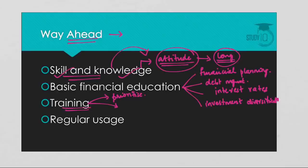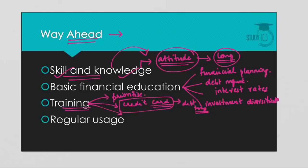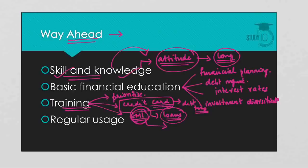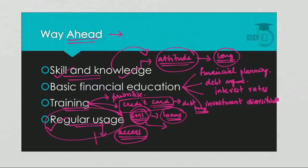People must be educated on the proper use of credit cards, as many who are unaware end up in a debt trap. Training must also be given on understanding the terms of EMI — equated monthly installments — which is very important in the case of loans. In general, to improve financial inclusion, the government should focus on the regular usage of bank accounts, not merely on access or increasing their number. Merely providing access is not enough — it must be backed up by regular usage, and this should be the primary focus of the government.